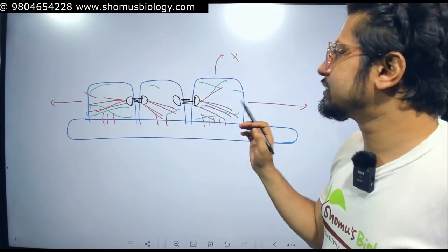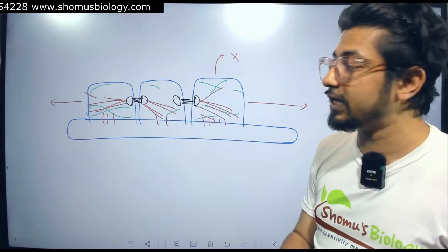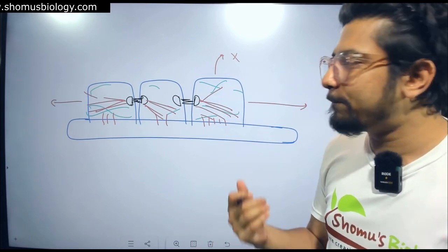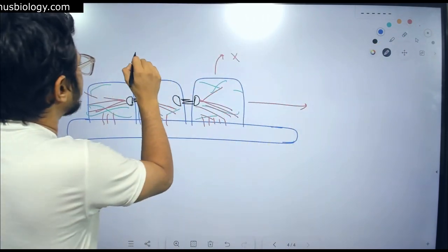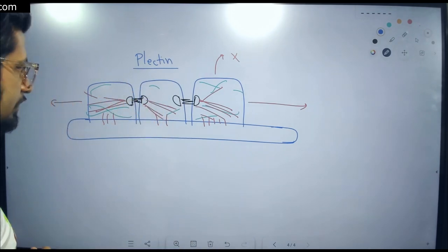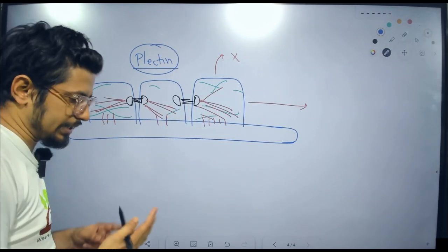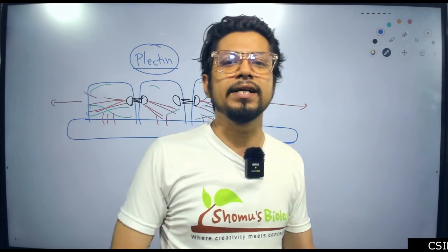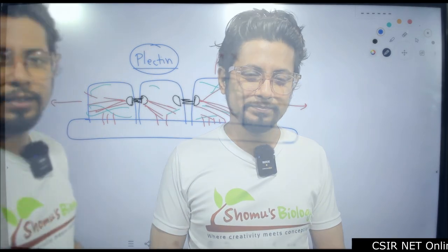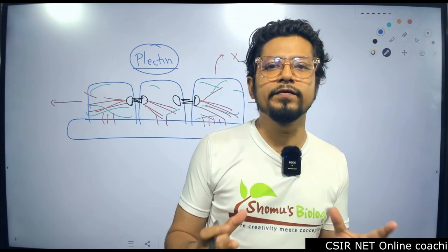To connect these intermediate filament structures to other cytoskeleton elements, cross-linking proteins are required. Plectin is an example of such a cross-linking protein. Once polymerization is complete and the structure is made, plectin holds these intermediate filament structures and associates them with the pre-existing microtubules and microfilaments in the cell.